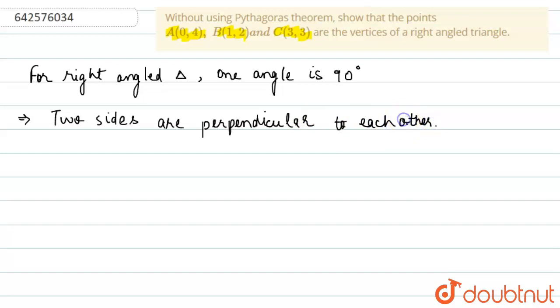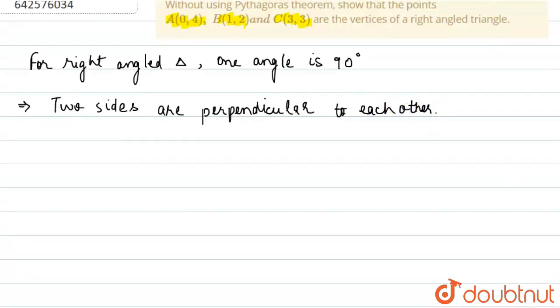Now, if we find the slope of the two lines, let the slopes be M1 and M2. We will find the slope for the lines AB, BC, and CA.